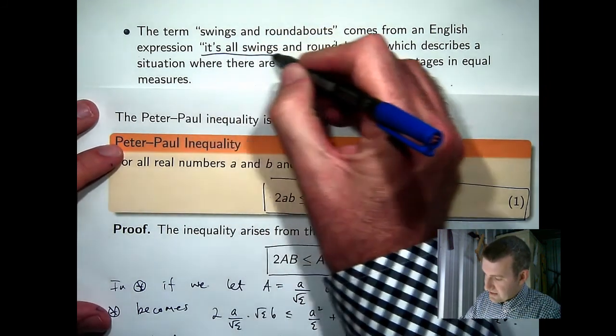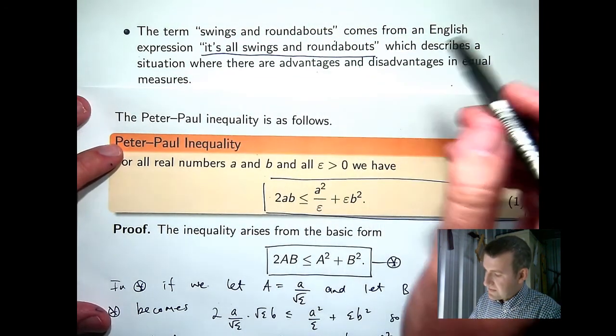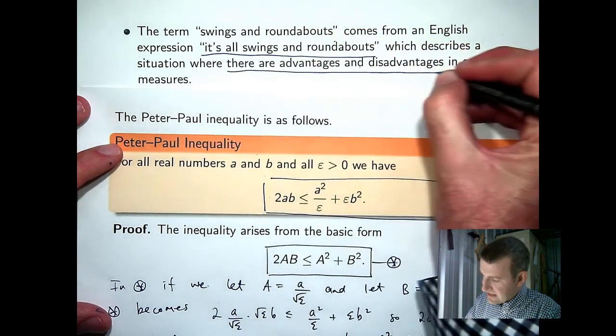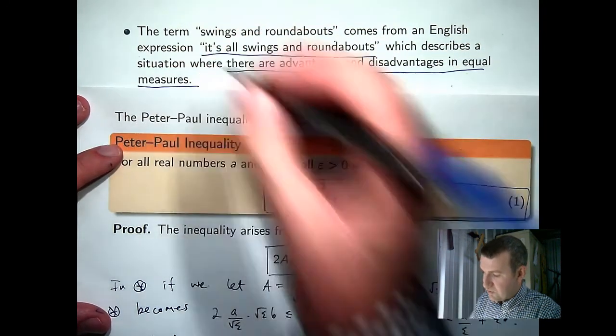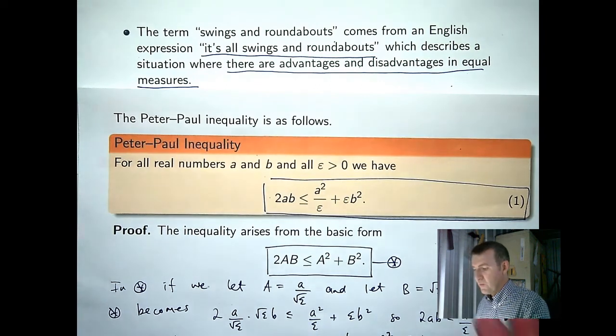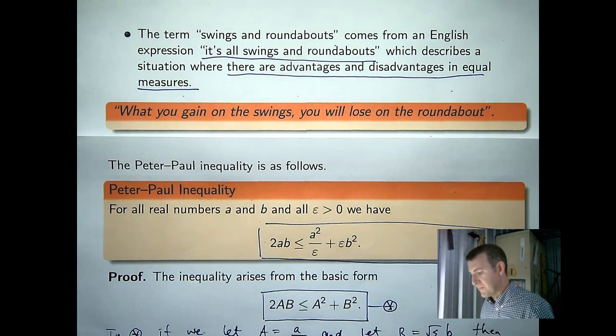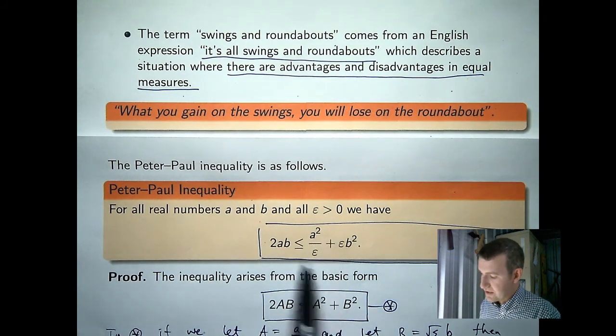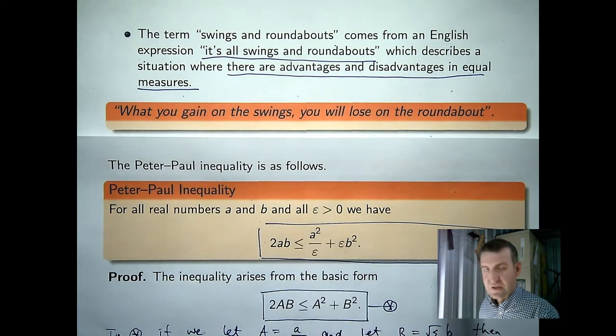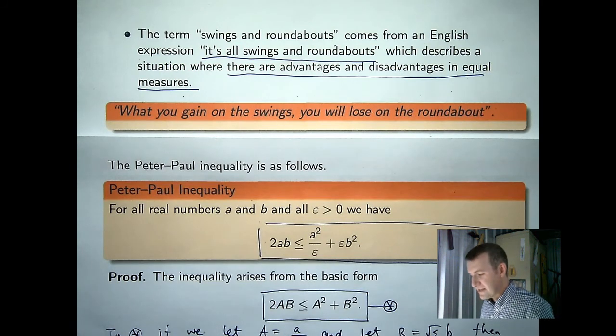And this is based on the English expression, it's all swings and roundabouts, which describes a situation where there are advantages and disadvantages in equal measures. What you gain on the swings, you lose on the roundabout. And this can be thought of going back to the Peter-Paul inequality with controlling one term but losing control on the other term. So that's just a little suggestion, a little something that I had in my head. I think swings and roundabouts inequality is a little bit more fun and a little bit more modern than the Peter-Paul inequality, but it's just a suggestion.